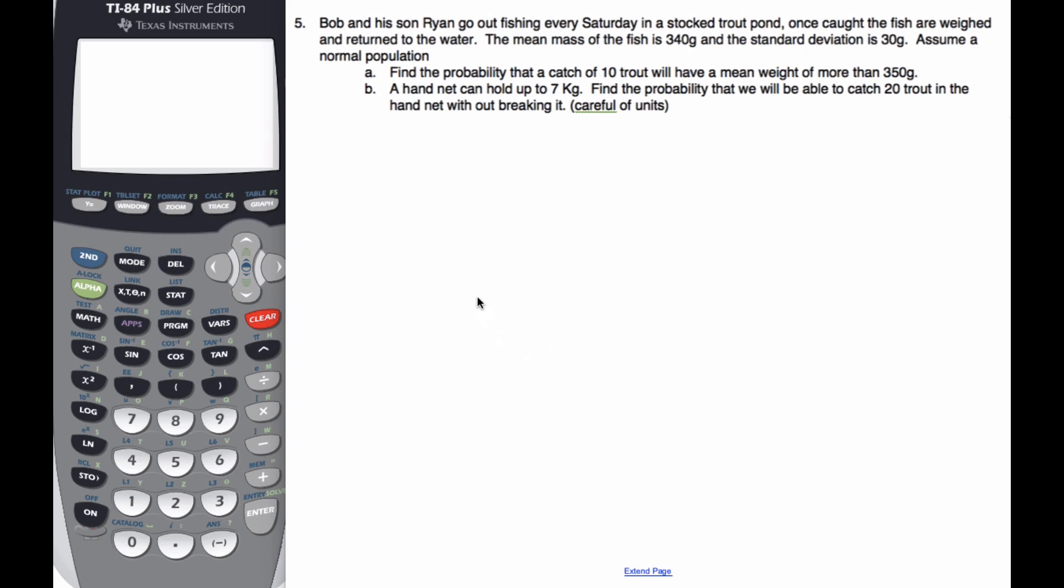Here's another example. We have Bob and his son Ryan go out fishing every Saturday in a stocked trout pond. Once caught, the fish are weighed and returned to the water. The mean mass of the fish is 340 grams. Standard deviation is 30 grams.